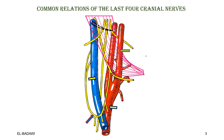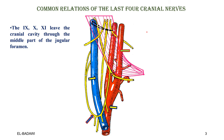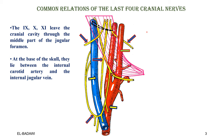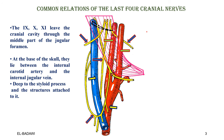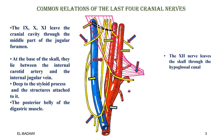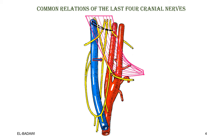Here are the common relations of the last four cranial nerves as they leave the cranial cavity. The 9th, 10th, and 11th leave through the middle part of the jugular foramen. At the base of the skull they lie between the internal carotid artery and the internal jugular vein, deep to the styloid process and the structures attached to it — the styloid apparatus — and posterior to the posterior belly of the digastric. The 12th nerve leaves through the hypoglossal canal, first deep to the internal jugular, and then joins the group.